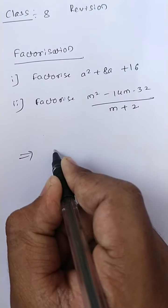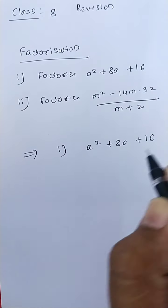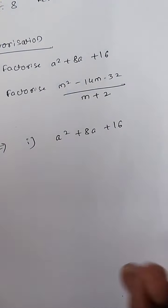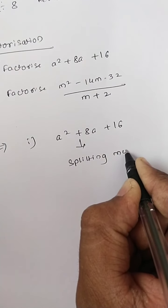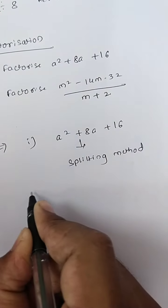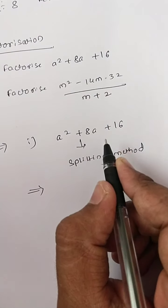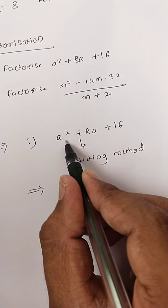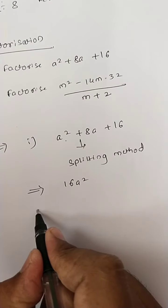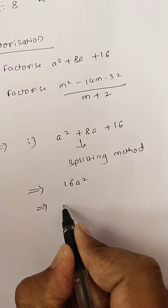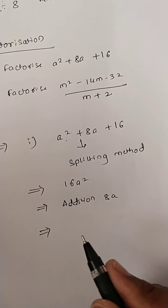So the first one is a square plus 8a plus 16. This is solved by the splitting method. In the splitting method, you have to find two factors such that if you multiply them, you get 16a square, and if you do addition, you get the middle term, that is 8a.